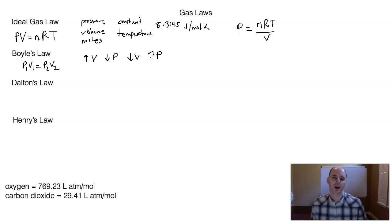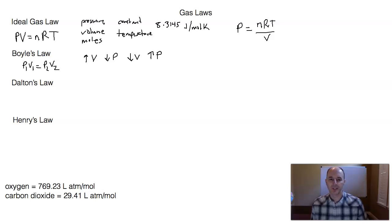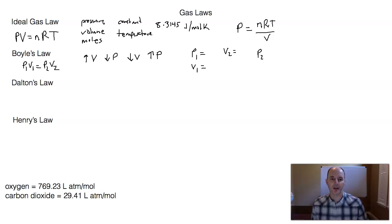Using Boyle's law, if you knew three of the variables, you could solve for the fourth variable. For example, if you know the starting pressure P1, and you know the starting volume V1, and if you knew the final volume V2, then you could use this equation to solve for P2, the pressure. It's just rearranging the equation. So if we wanted to know P2, the final pressure, we would look at P1 times V1 divided by V2, and that would tell us the final pressure. So if you know the initial pressure and the initial volume and you know what the final volume is going to be, then you could calculate the final pressure. Make sure you have a calculator for these as you do examples in the book.